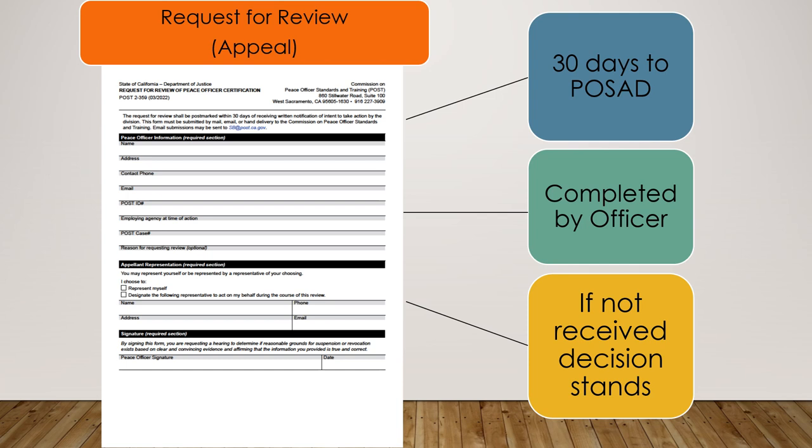This is the newly created request for review form, or the appeal. It is up to the subject officer to fill out this form if they desire a request for review. The officer has received a certified letter with a recommendation from the division to decertify. If this form is not received within 30 days, the decision to decertify stands — in other words, the officer will be decertified.